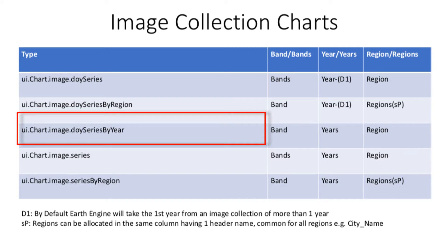This chart is also similar to the first two charts as we still do analysis on data of 365 days or one year. In the first two types of charts we displayed bands of a region or vice versa. If you provide data of more than one year, Earth Engine would take the first 365 days for those charts. But here, Earth Engine will plot another index if the days exceed 365 as a separate year.